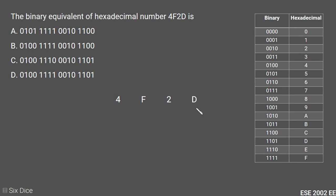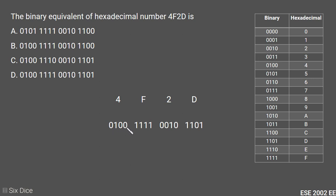D is represented as 1101, 2 is represented as 0010, F is represented as 1111, and 4 is represented as 0100. So option D is our answer.